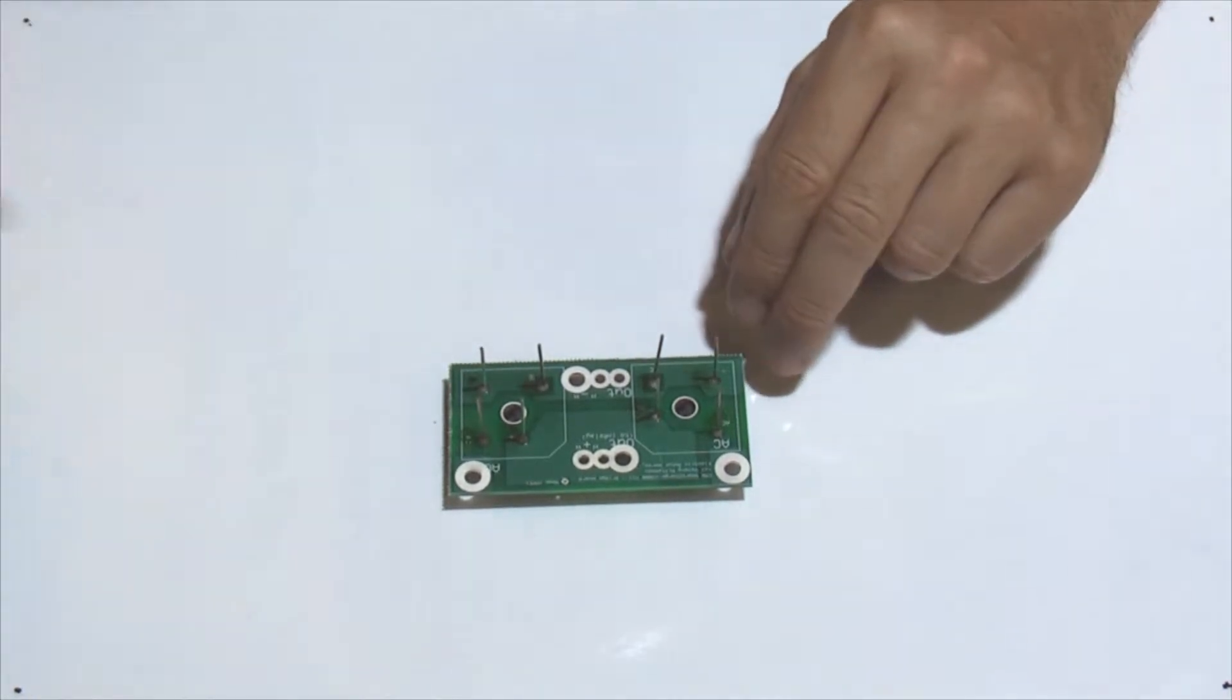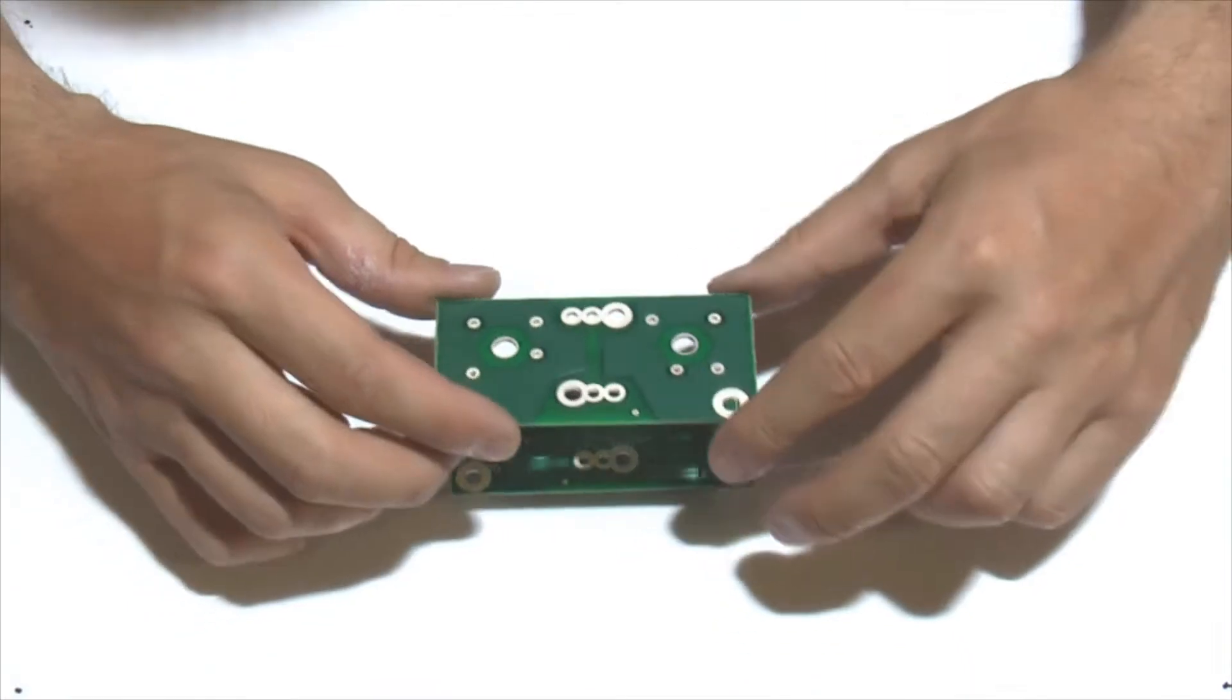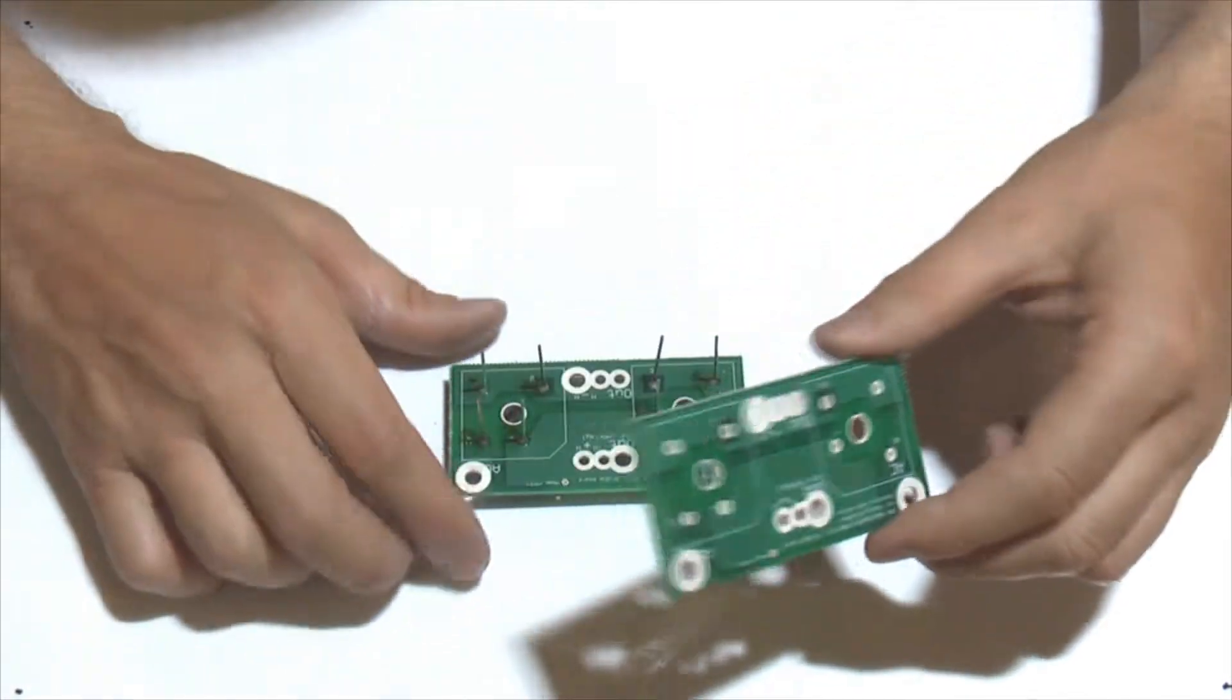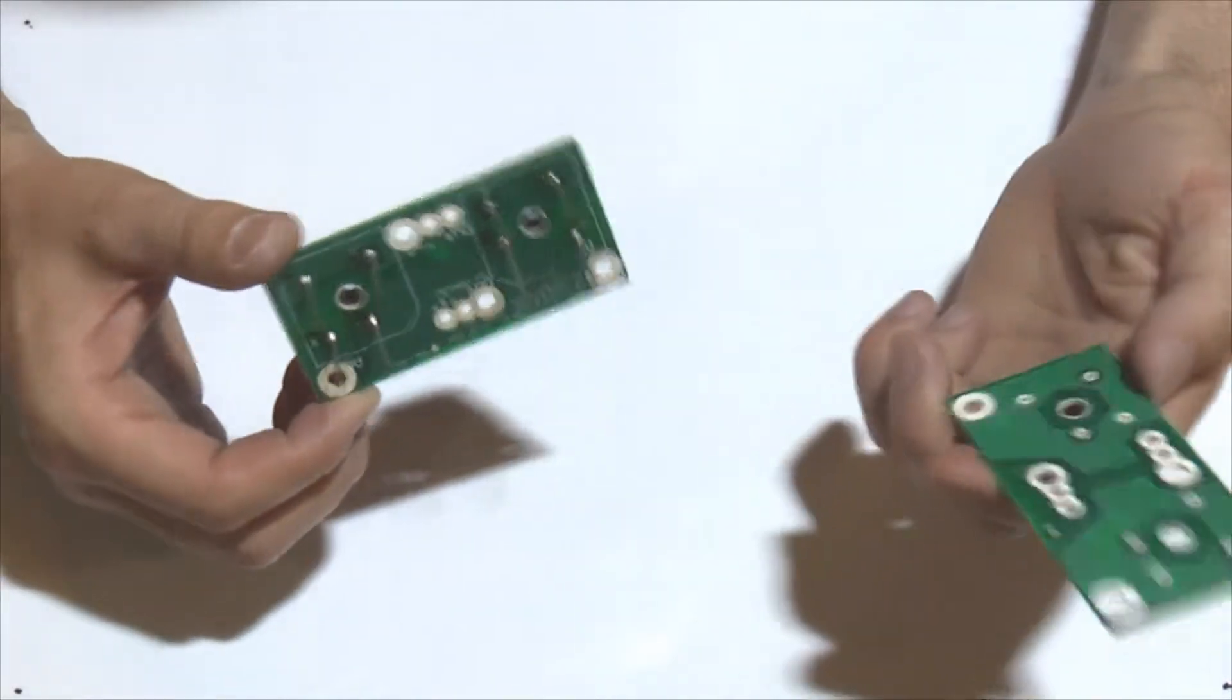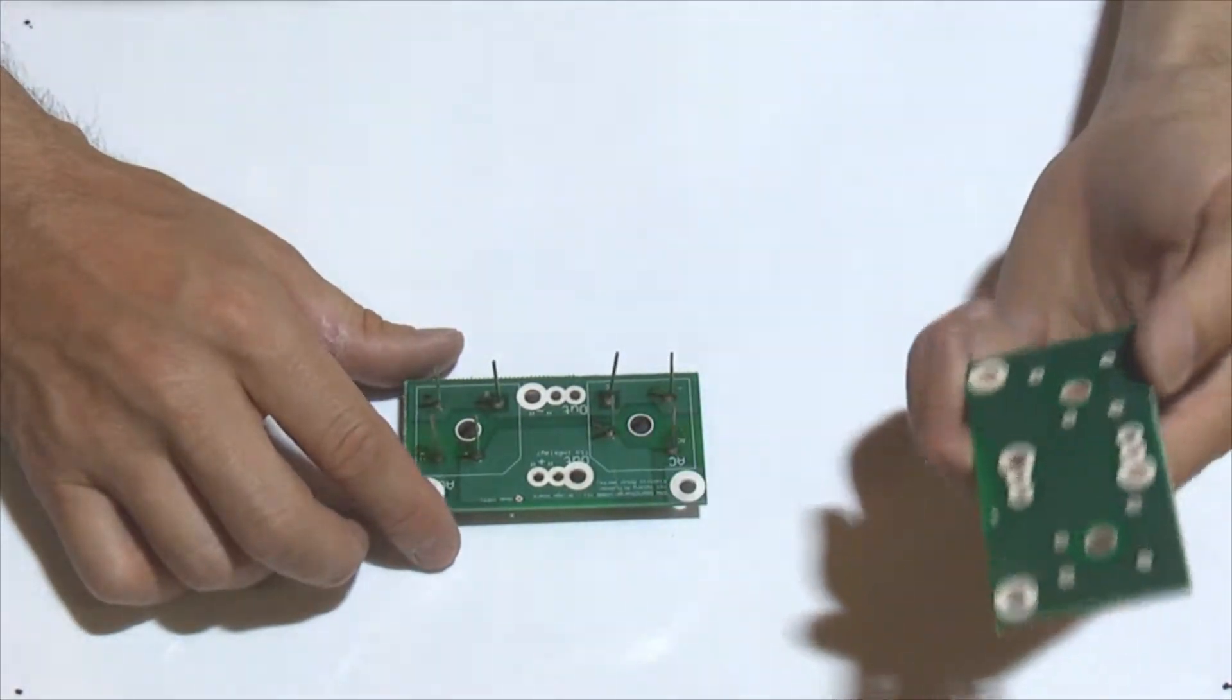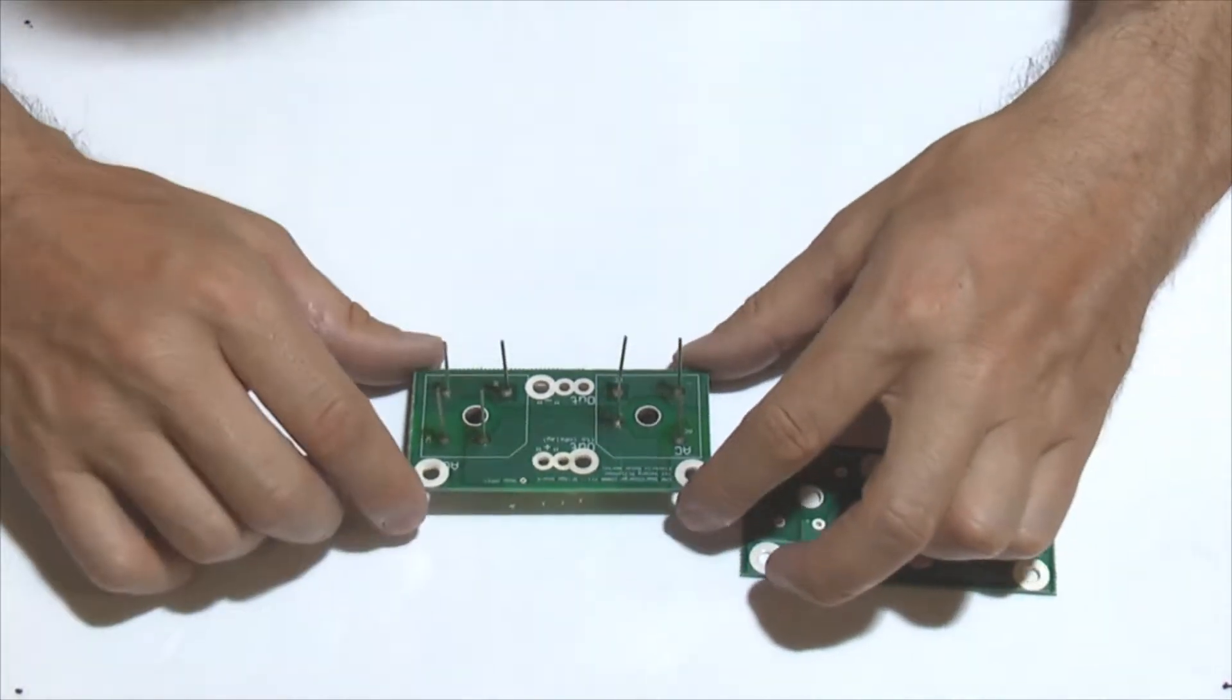The other way to reinforce this connection is to use this second board, just like that, and to put it on top like this, and effectively just make another parallel connection. So that spreads the load into parts and allows you to not put any bridges in.